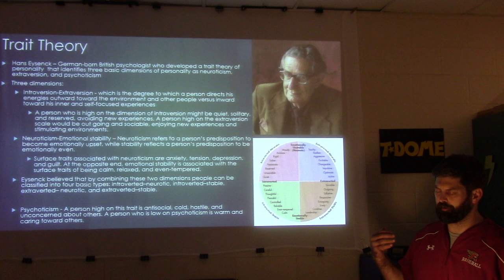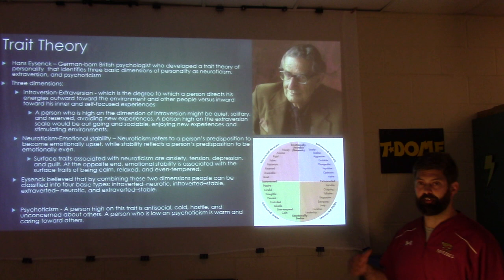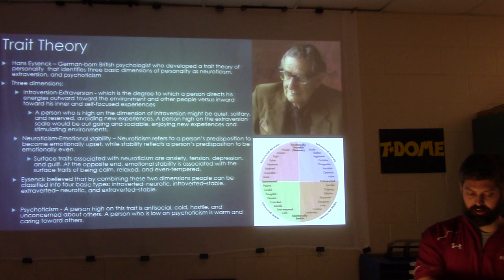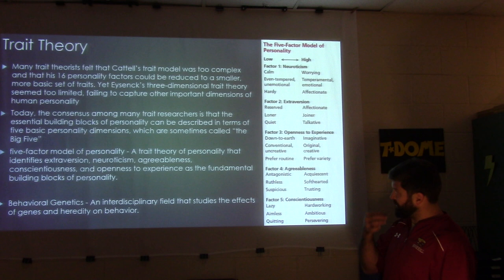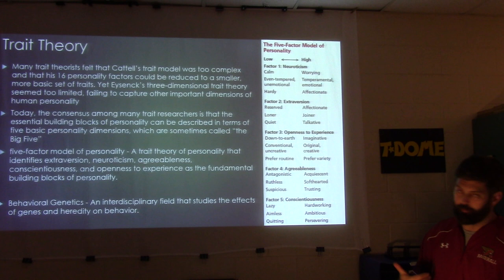Other factors related to psychoticism include tormenting animals as a child or being obsessed with fire — these all contribute to whether someone might become a serial killer. Many trait theorists felt that Cattell's model was too complex and that 16 personality factors could be reduced to a smaller, more basic set of traits.